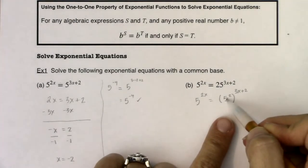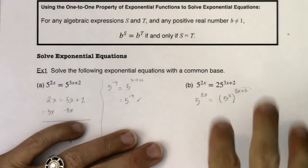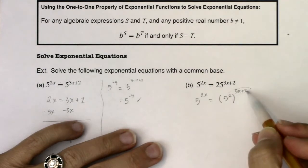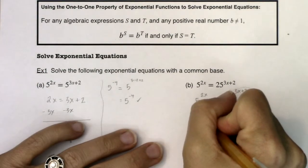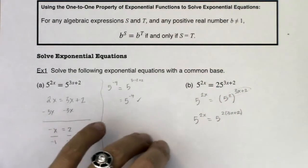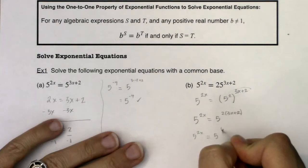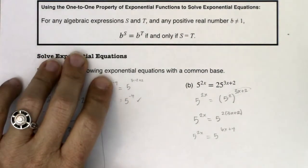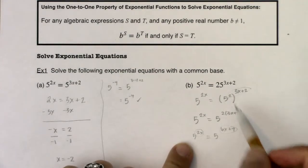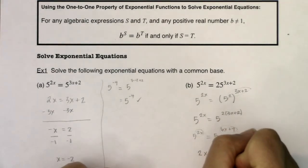Now going back to our power rules — when you have a power raised to a power, you multiply the exponents. Be careful to distribute this 2 not just to the 3x but to the 2 as well. So we have 5 to the 2x equals 5 to the quantity 2 times (3x + 2). Distributing gives 5 to the 2x equals 5 to the 6x plus 4. Now I can apply the property: since the bases are the same, the exponents must be equal, so 2x equals 6x plus 4.